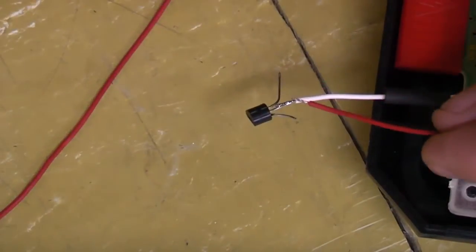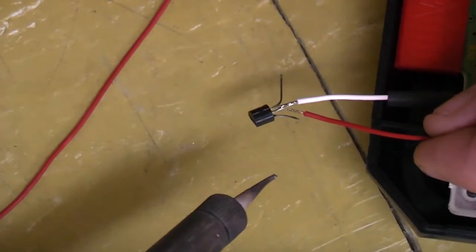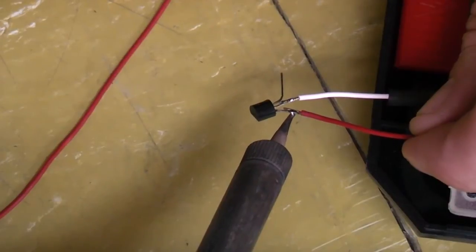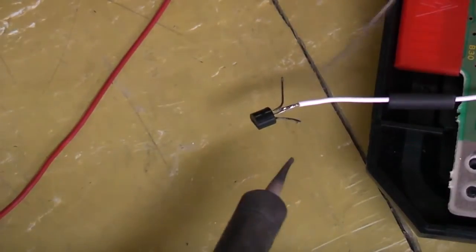Once you've got the first wire done, it makes it a little bit easier because it'll hold it there in place for you. So now we're just going to attach a wire from the 5 volts. It just needs a little more solder on there.